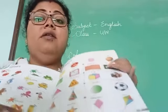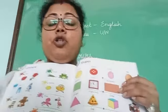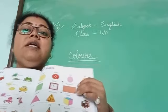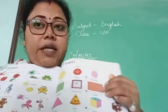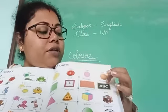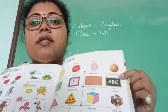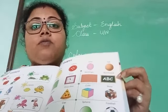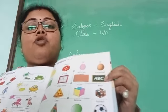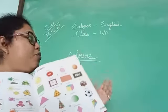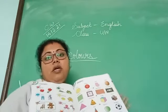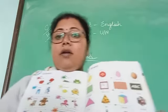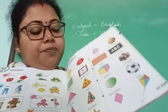Next, the next shape is rectangle. What is the example of rectangle? It is blackboard. Blackboard shape — my blackboard is also this shape. This board shape is rectangle.